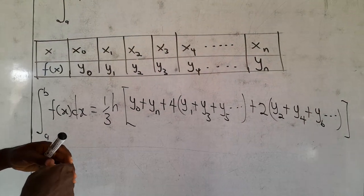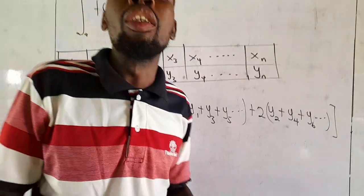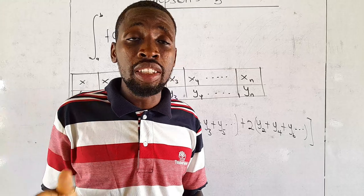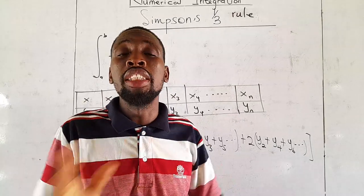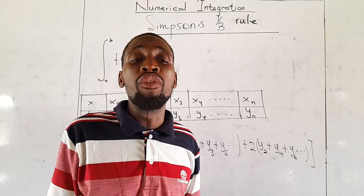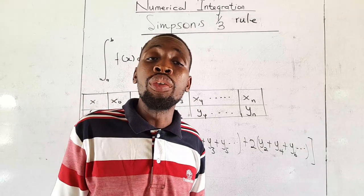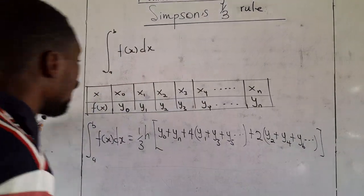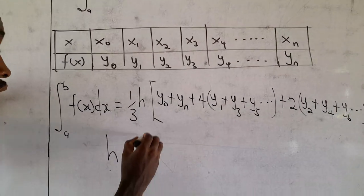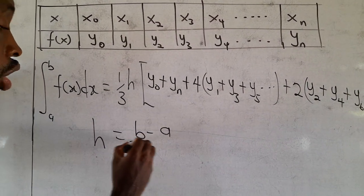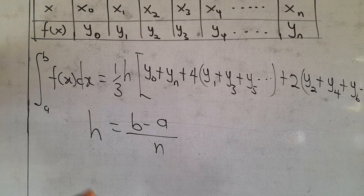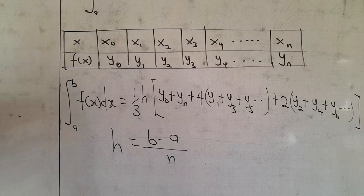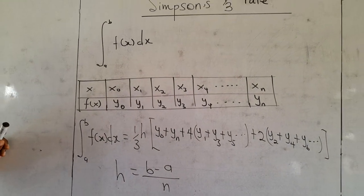However, Simpson's 1/3 rule can only be used if n, the number of subintervals, is even. If it is not even, Simpson's 1/3 rule becomes inapplicable. Remember our h is given as (B − A) / N, where N is the number of subintervals. So if the number of subintervals is even, we can use Simpson's 1/3 rule.